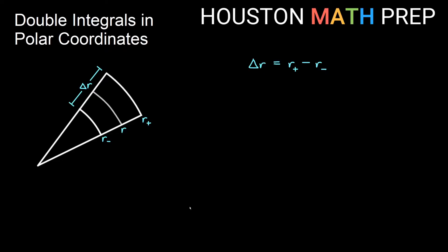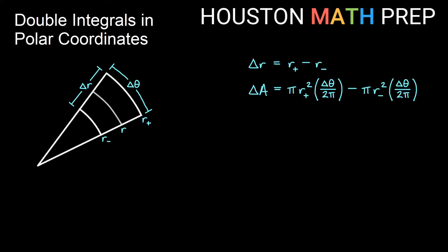If you remember from doing single variable polar integrals, the width in the theta direction is just that amount delta theta. Now to figure out the area of my polar box: think of it as part of a circle with the outside radius r plus — that's some piece of pi r plus squared, and it'll be delta theta out of 2 pi of the circle. So we write that area for the entire pizza slice, then subtract out the area of the inner smaller pizza slice with radius r minus and the same delta theta width. That gives us the area of our polar box.